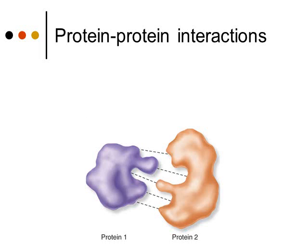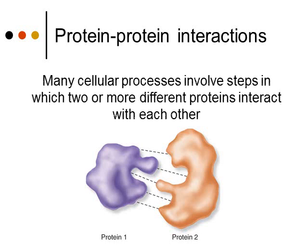Proteins can interact with each other. A lot of cellular processes involve steps where two or more proteins interact. This slide shows a purple protein and a pinkish protein — those two proteins can interact with each other, and they can help speed up metabolism or help with reactions, whatever the cell needs to do.